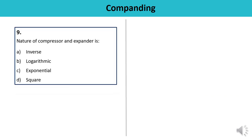Question number nine: The nature of compressor and expander is — inverse, logarithmic, exponential, or square? The compressor and expander are inverse in nature. Whatever function is performed by the compressor, the reverse operation is performed by the expander. Compression of the signal is done at the transmitter side, while expansion is done at the receiver side. The overall combination of compression and expansion is known as Companding. The answer is A.